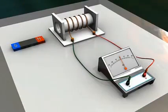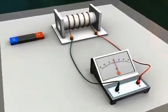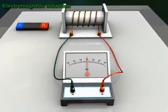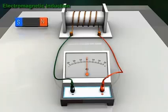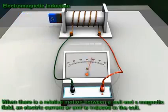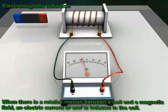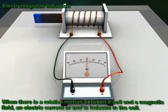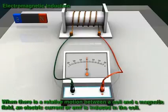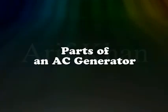Working principle of an AC generator: an AC generator works on the principle of electromagnetic induction. In electromagnetic induction, when there is a relative motion between a coil and a magnetic field, an electric current or EMF is induced in the coil.